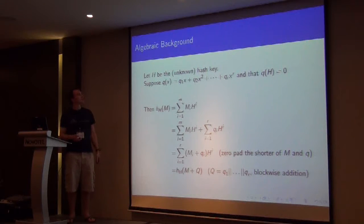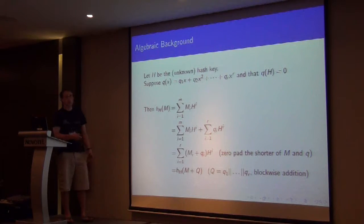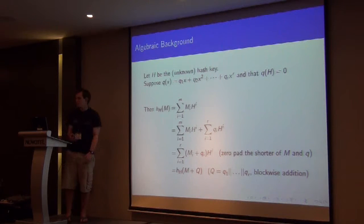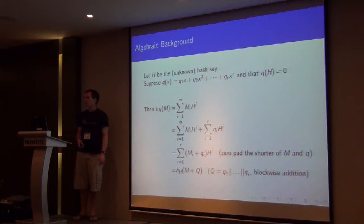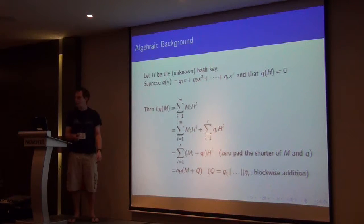And so what we suggest is that if we've got h, our unknown hash key, and we're going to suppose that we can write down some polynomial, this forgery polynomial, q. So it hasn't got, there's no q_0, there's no constant term, because there's no constant term in the message, in the hash polynomial.